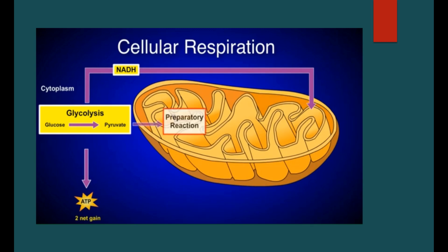Stage two is the preparatory reaction. During this stage, the pyruvates of glycolysis move into the mitochondria where they are converted into acetyl CoA. During this conversion process, more NADH is produced and carbon dioxide is released.